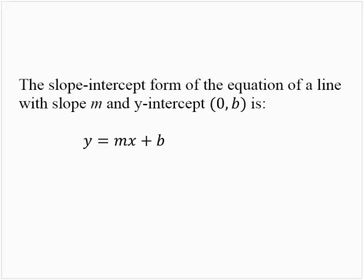The slope-intercept form of the equation of a line with slope m and y-intercept (0, b) is y equals mx plus b.